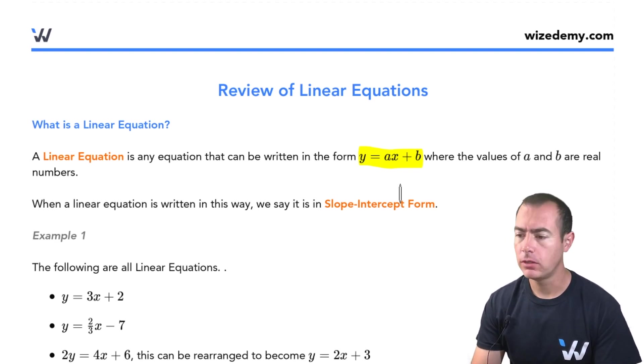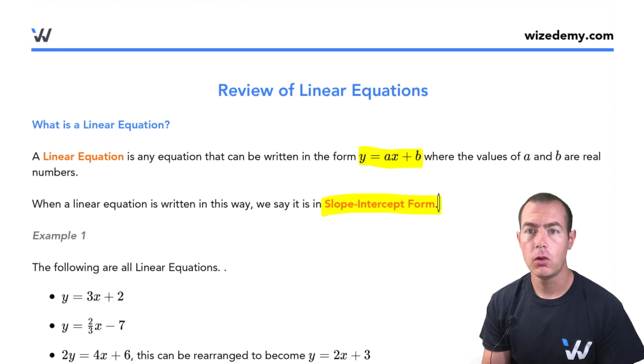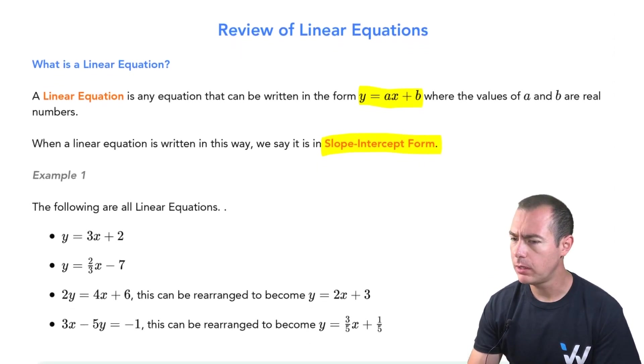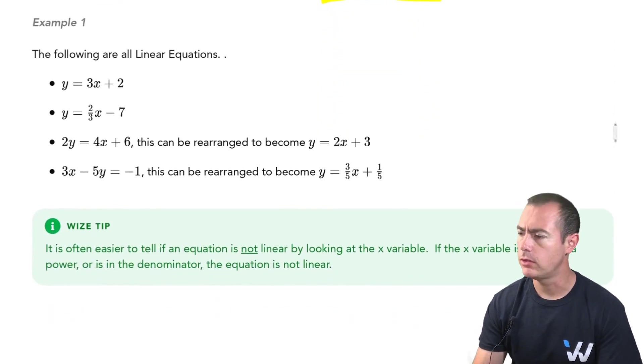Now this particular form has a special name, this is what we call our slope-intercept form, and it's really handy for graphing if we happen to know the slope and the y-intercept. Let's go ahead and look at a few examples so you get a better sense of what I'm talking about when I say linear equations.